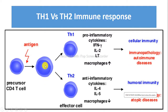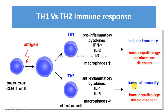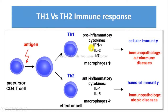The Th1 immune response is generated by Th1 cells and the Th2 immune response is generated by Th2 cells. Th1 leads to cell-mediated immunity whereas Th2 leads to humoral immunity. The polarizing cytokine for Th1 is IL-17, while Th2 is triggered by polarizing cytokines including IL-4 and IL-2.